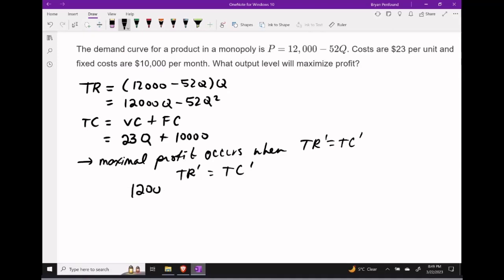Finding the derivative of the revenue function gives 12,000 - 52 times 2, which is 104, times Q, and the derivative of the total cost function is 23.